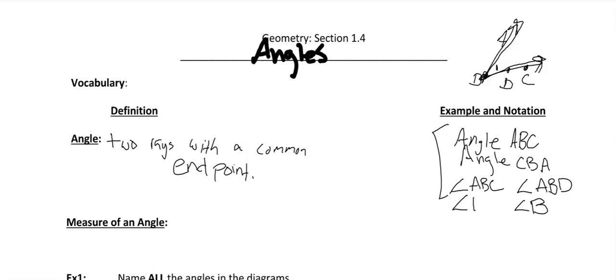When can you use just the vertex, and when can you not? You can do that if there is no possible way someone could confuse what angle you're talking about. But if you had points A, B, C, and D all meeting at B, and I said angle B, how many possible angle B's are there? One, two, and the whole thing — three. So there are three possible angle B's. I cannot use a single point; I have to use three.